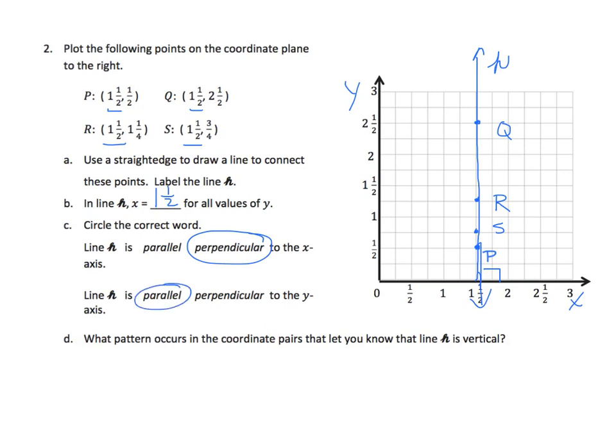What patterns do we see? What pattern in the coordinate pairs that lets you know that H is vertical? We've noticed that all values of X are the same. And we could look at the previous part number one. If we have the values of Y are always the same, we know that it is a horizontal line. We'll apply this knowledge in the next problem.